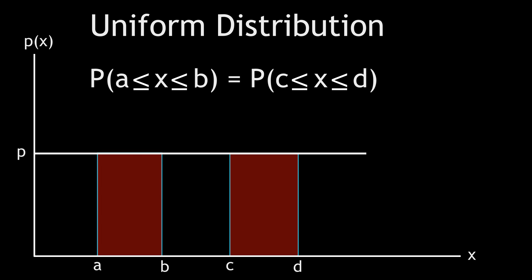The simplest continuous distribution is the uniform distribution. This is where our probability density function is just a constant, say, p. If we take any two intervals of the same length, X is equally likely to be between each interval. Remember that fact, because we're going to use it in kind of a crazy way later.